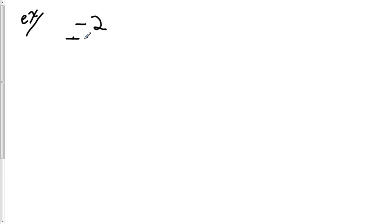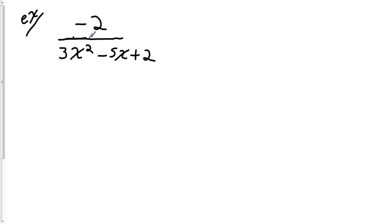The first example I'd like to look at is an example where we have distinct linear factors. The rational expression is going to be negative 2 divided by 3x squared minus 5x plus 2. This is the rational expression we're going to decompose into its partial fractions. The denominator of each partial fraction is actually going to consist of the factors of the polynomial in the denominator of the original rational expression.